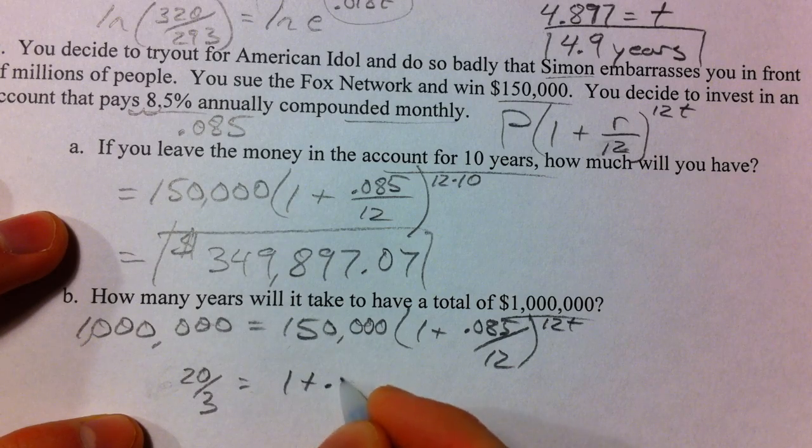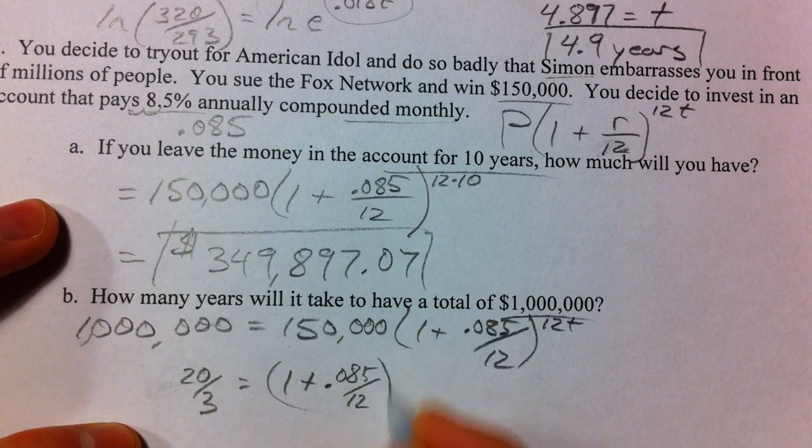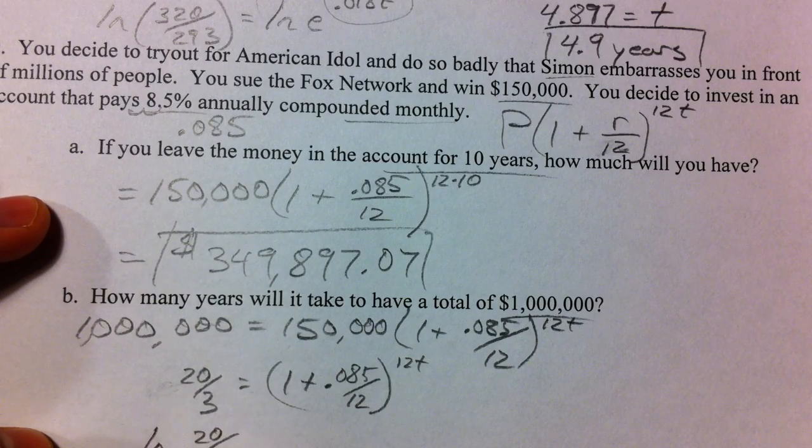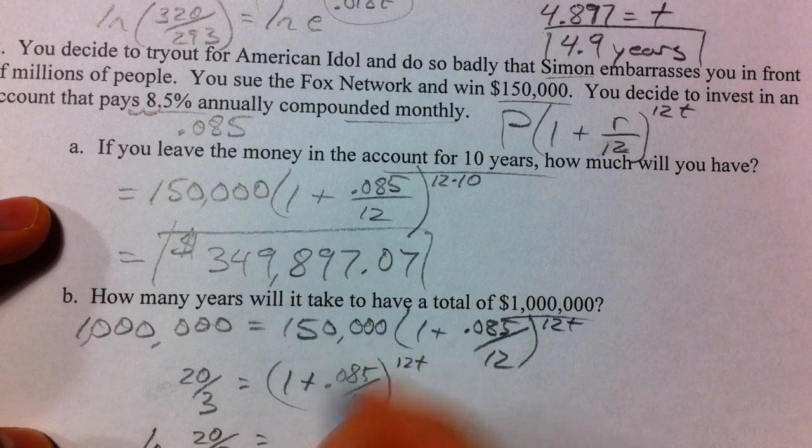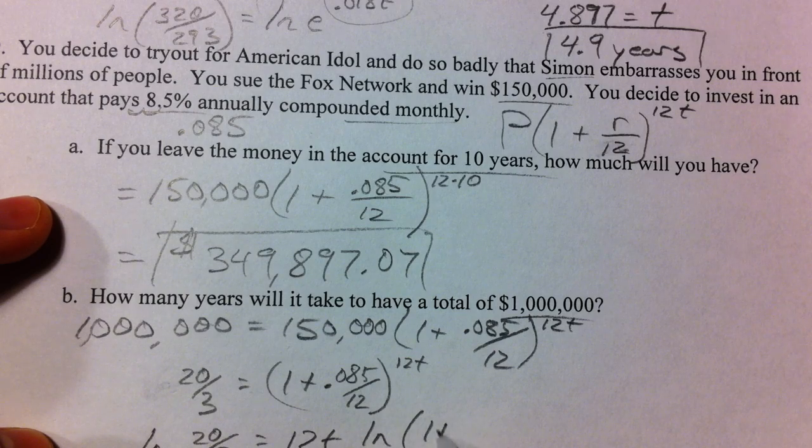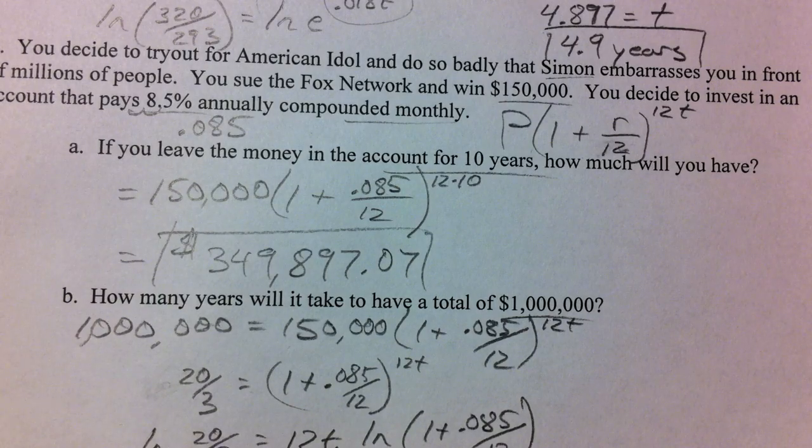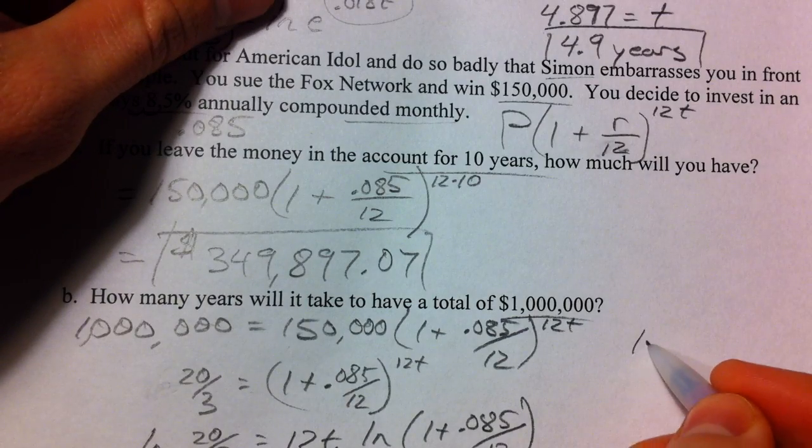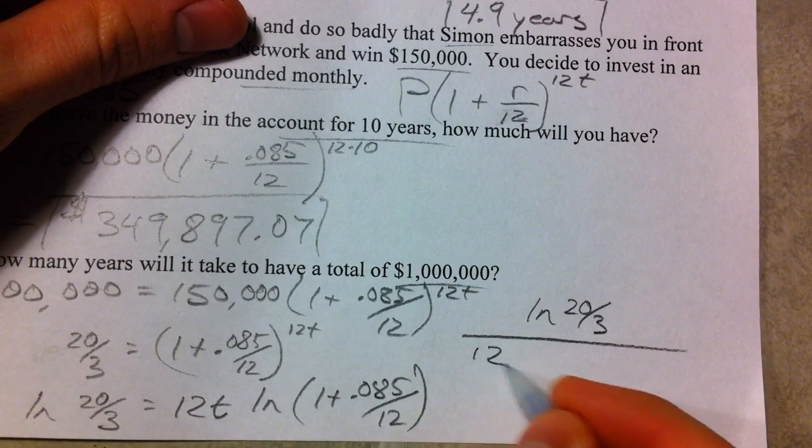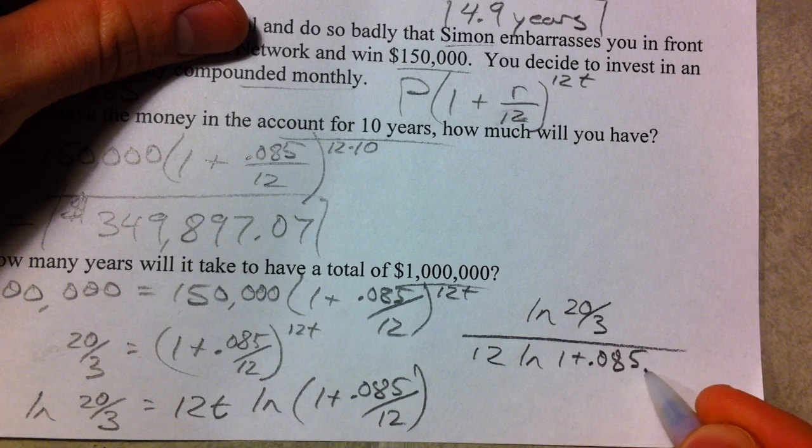Equals 1 plus .085 over 12 raised to the 12t. Natural log both sides. Natural log of the 20 over 3 equals the natural log of this whole side that brings that 12t down in front with the natural log of 1 plus .085 over 12. This t is what we're solving for and so let's take that and get the t by itself so let's divide by the 12 and by the natural log of 1 plus .085 over 12.